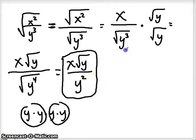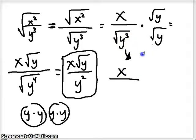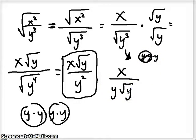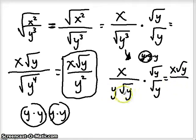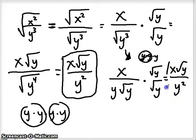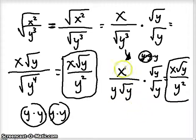We could have also gotten there by simplifying first. We could have had x on top, taken the square root of y cubed — taking out one y as a pair and leaving one y under the radical — then rationalized and still gotten x times the square root of y on top, and y squared on the bottom. So either way works. When dealing with these problems with a lot of exponents and radicals, there's always going to be multiple ways of solving.